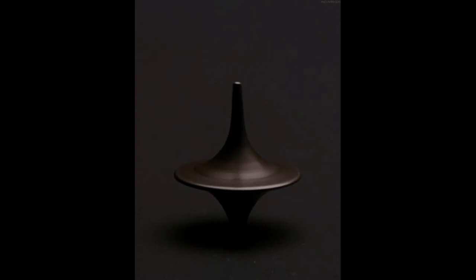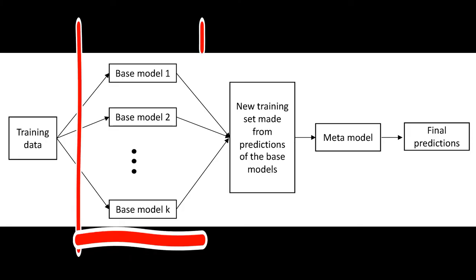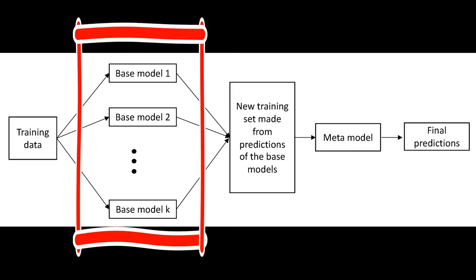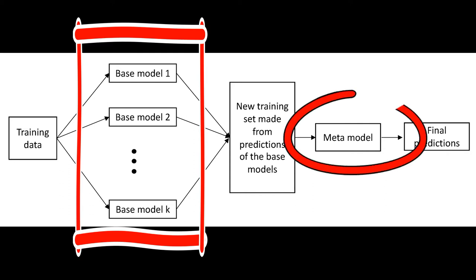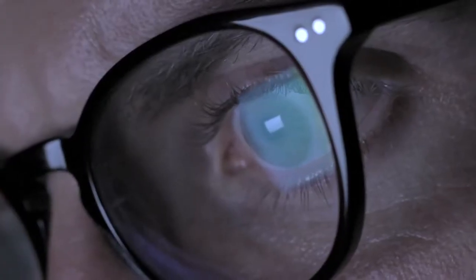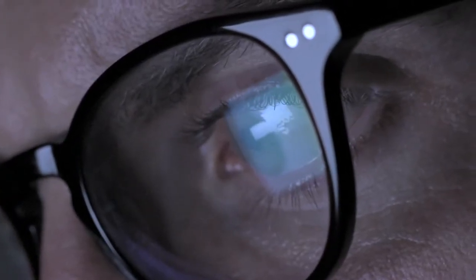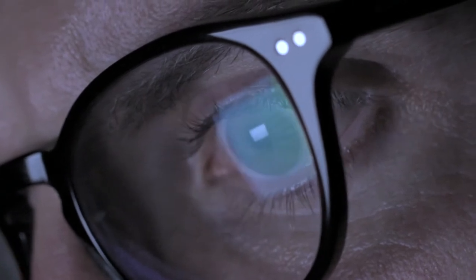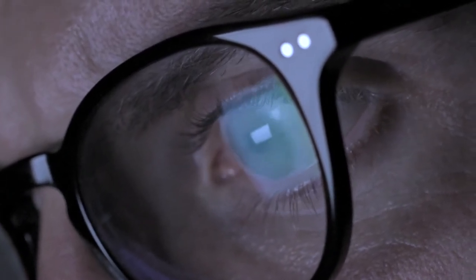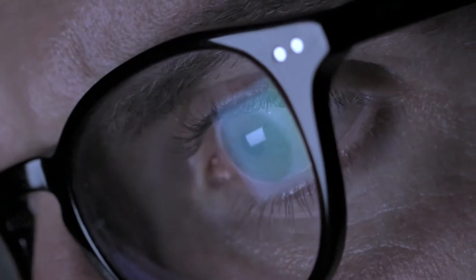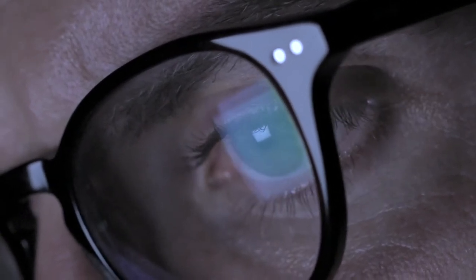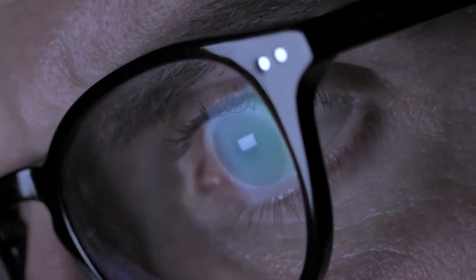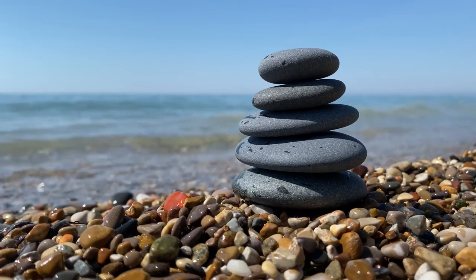First, you need to understand the difference between the base models and the meta-learning models. The base models are usually a diverse range of individual models that make unique assumptions about the prediction. The meta model is a model that interprets the predictions based on the base models. Highly interpretable models such as linear regression or logistic regression can be used for regression or classification problems, but you can definitely use other models as you see fit for the meta-learning models.